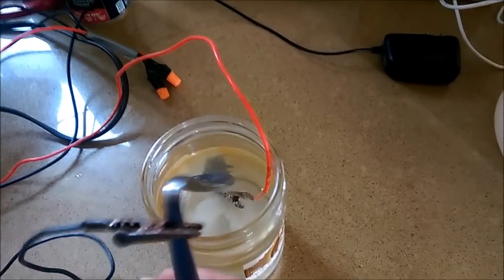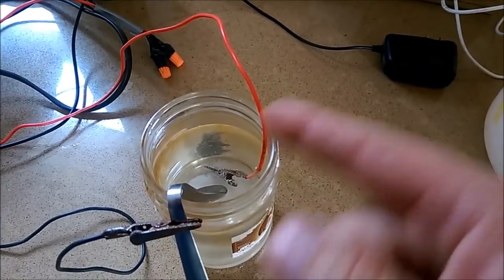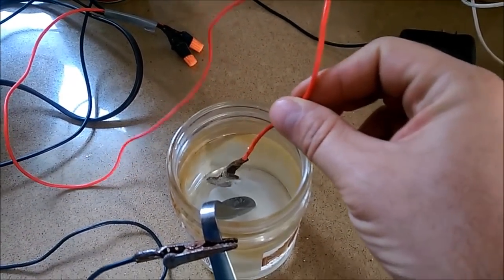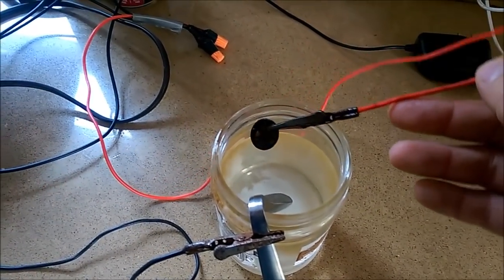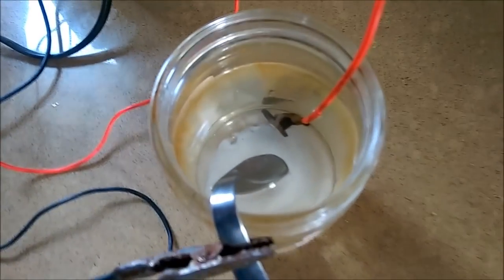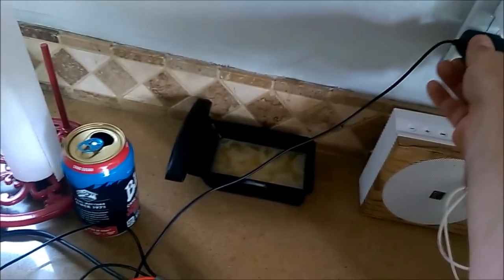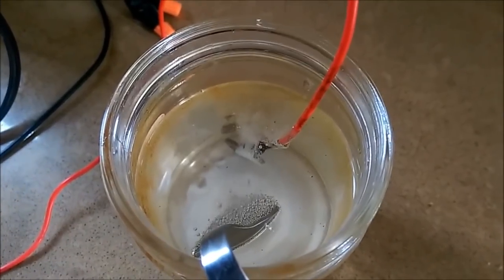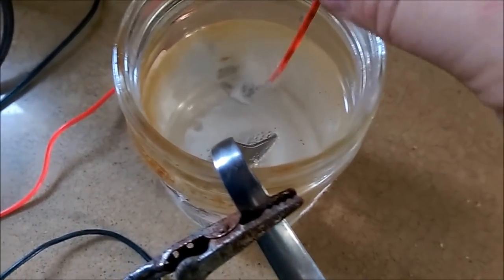I have the setup here. I've got the black hooked to the stainless steel spoon. The coin is clamped on here, put down in the water. The spoon is in the water and it's not touching the coin. Then you plug in and you can see they're both kind of sizzling right now, but the red one is sizzling the most and that's what you want.